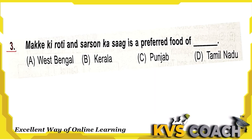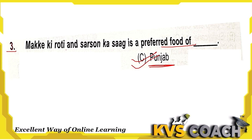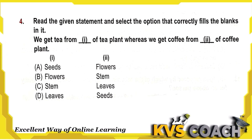Question 3: Makki ki roti and sarson ka saag is the preferred food of — this is the food from Punjab, so option C is the right answer.